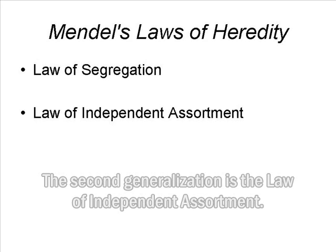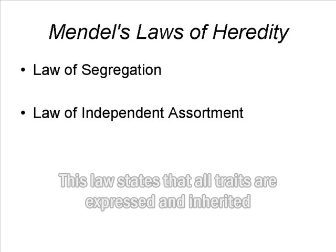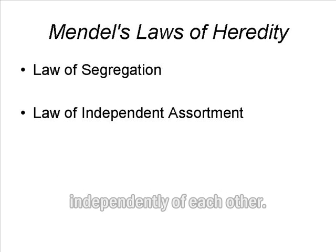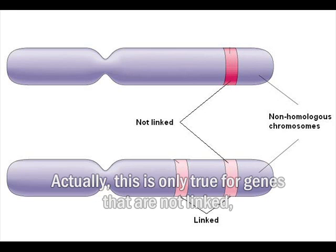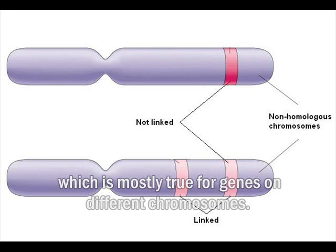The second generalization is the Law of Independent Assortment. This law states that all traits are expressed and inherited independently of each other. Actually, this is only true for genes that are not linked, which is mostly true for genes on different chromosomes.